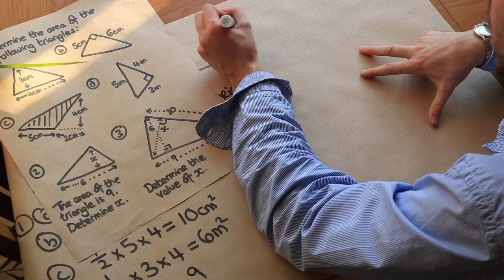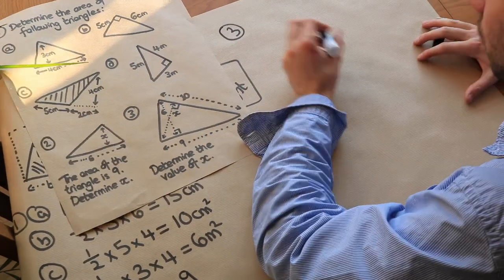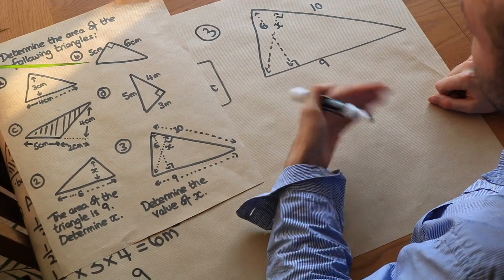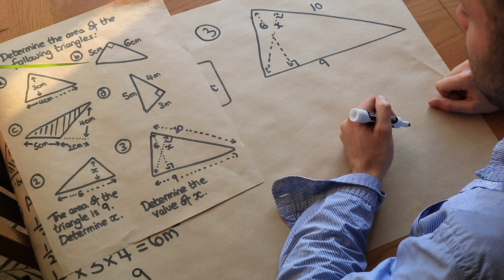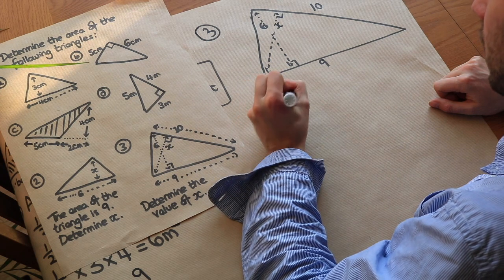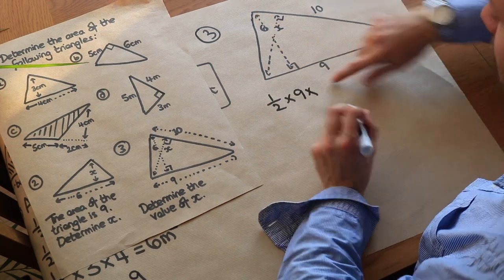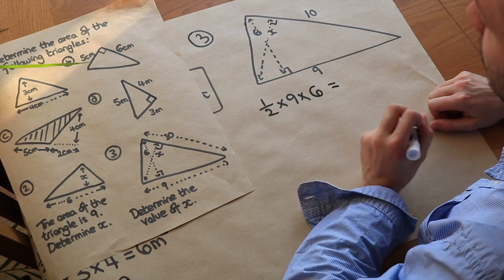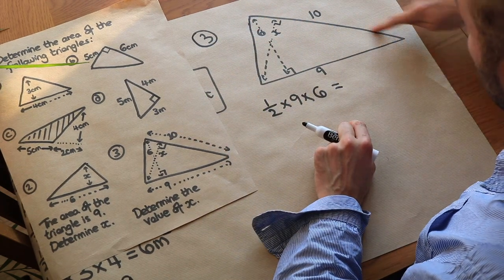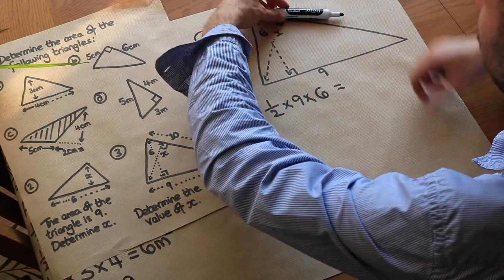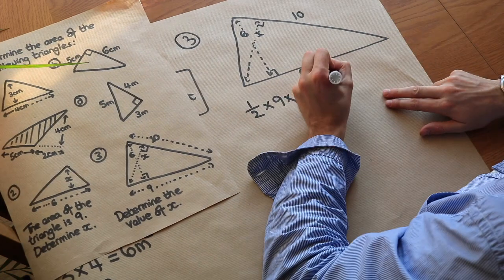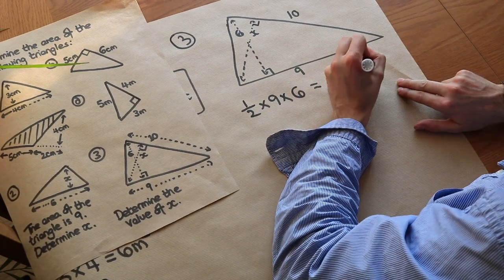Finally, we have this slightly harder question. We need to determine the value of x. We can use different sides as the base. Using one side as the base, the area would be half times 9 times 6. But we could also find the area using the side of 10 as the base, in which case the perpendicular height is x, giving half times 10 times x.